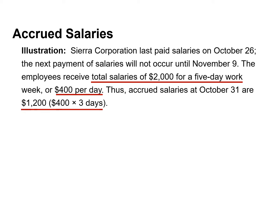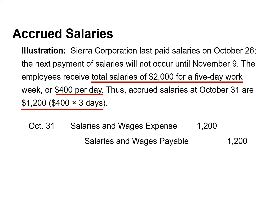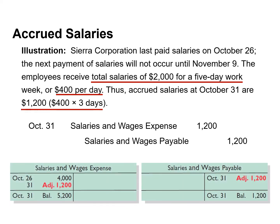The accrued salaries at October 31st are $1,200, calculated by taking $400 per day multiplied by three days. The adjusting entry increases, or debits, salary and wages expense and increases, or credits, salary and wages payable. After this adjustment, the balance in salary and wages expense represents the actual expense for the month of October. The balance in salary and wages payable of $1,200 is the amount that Sierra owes as of October 31st.